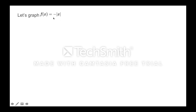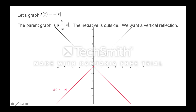Let's graph f(x) = −|x|. We know y = |x| is our parent graph — that's this black graph. We've got this negative, and it's outside the absolute value. Outside is a vertical change, so the graph is going to flip down over the x-axis and face down instead of up. Here's the graph — this red graph — f(x) = −|x|.